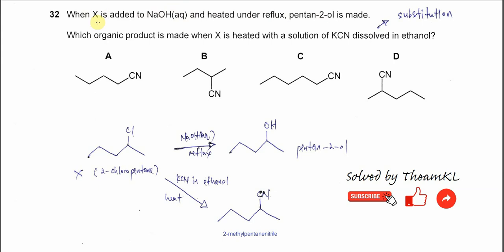We can deduce the structure of X from the pentane-2-ol. This is the structure of pentane-2-ol: first carbon, second carbon — on the second carbon there is an OH group. So if we want to find the haloalkane that produces this pentane-2-ol, we just need to replace the OH with chlorine. So X is 2-chloropentane.